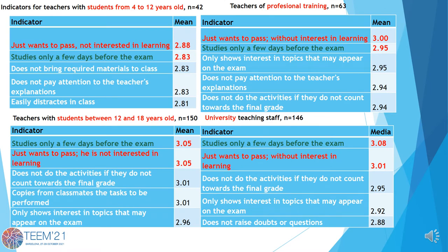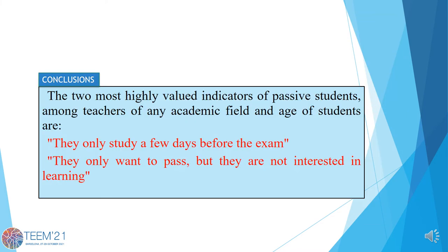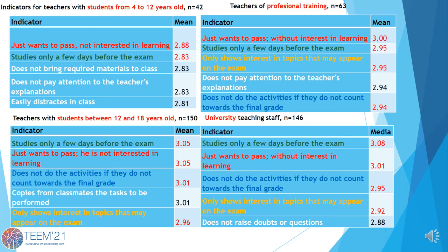It can be observed in these tables, with items in red and green, that the two most highly valued indicators among teachers of any academic fields and age of students are: 'students only study a few days before the exam' and 'students only want to pass the day because they are not interested in learning,' most with an average around 3 points out of 4. Excluding teachers with students between 4 and 12 years old, who show different indicators, the rest of the teachers present the same 4 indicators among the 5 most valued.